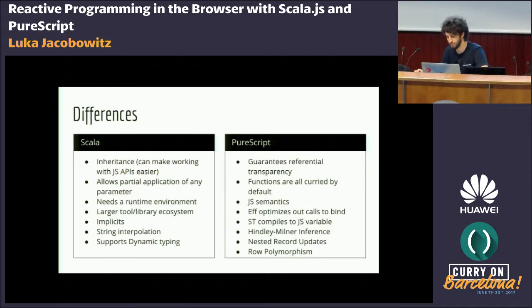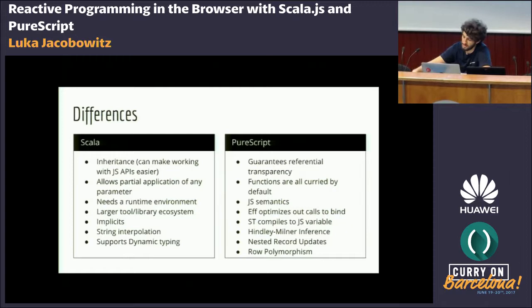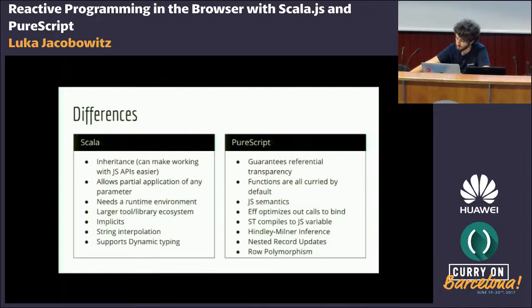Another cool thing PureScript does is that the Effect type, which is like Haskell's IO, can actually optimize out calls to bind, so if you have a large structure of monadic sequencing, in some cases it can be completely optimized away. Also the ST monad, which can use mutable state, can actually compile to JavaScript variables. Instead of mutating an actual variable as you would in Scala with vars, you'd use an ST monad in PureScript and it would compile to a JavaScript variable.